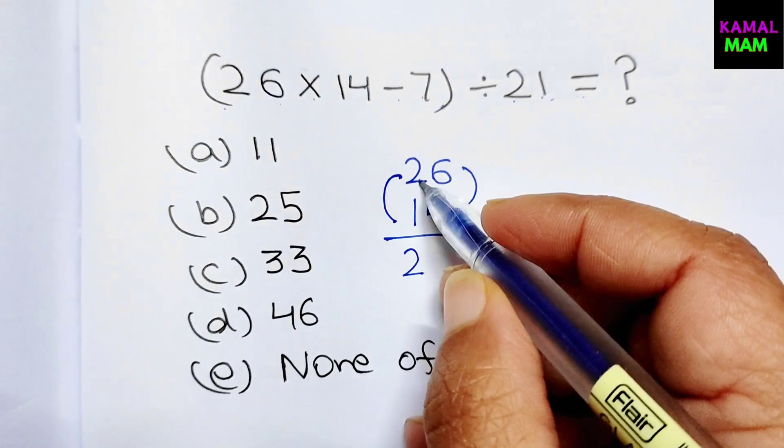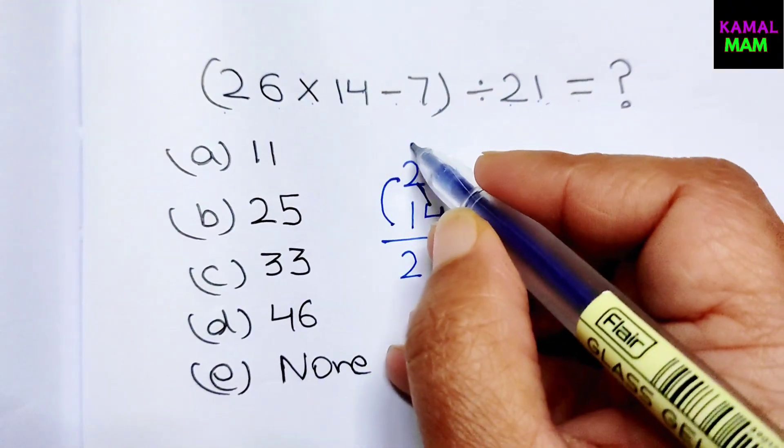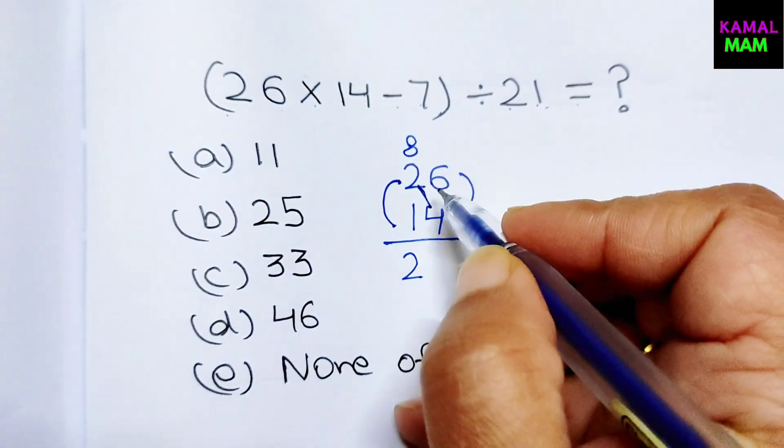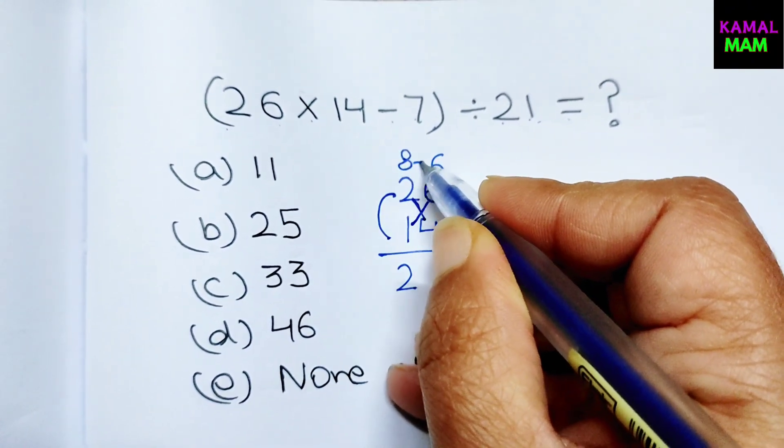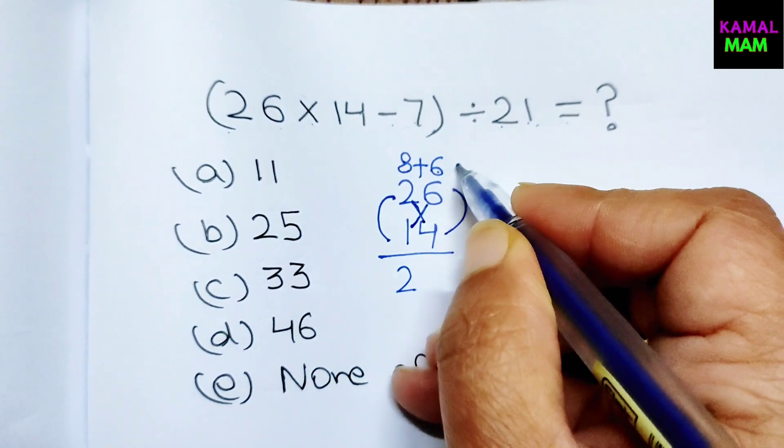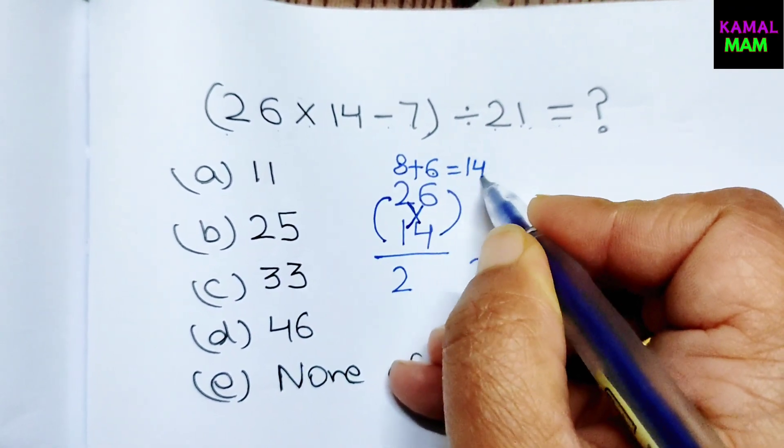So now 2 into 4 is 8 here, so we have to write down 8 here. 1 into 6 we get 6 here. Now just add them up, 8 plus 6 equals 14.